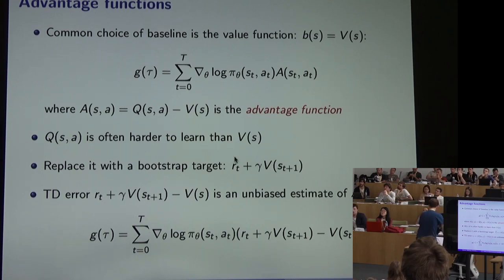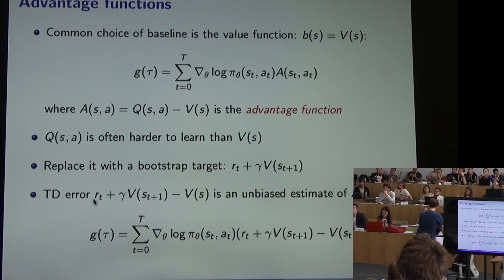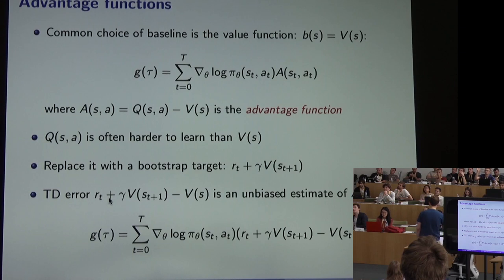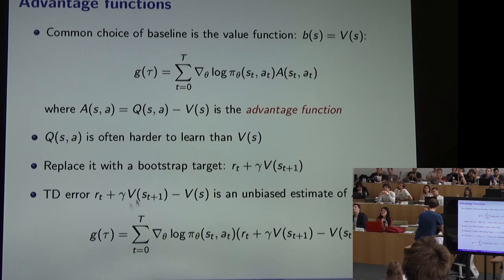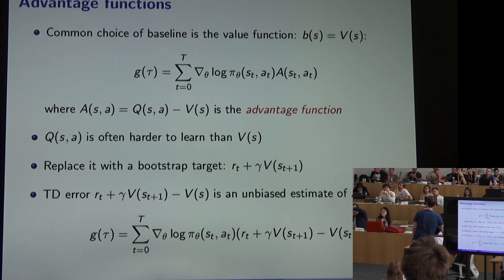If we replace Q in the expression Q minus V with this bootstrap target, we get a quantity that might look familiar — it's just the TD error. So if our value function estimate is based on this bootstrap target and we have a variance-reducing baseline based on V, the entire term in the gradient becomes the TD error. This is the TD-error-based estimate of the policy gradient.